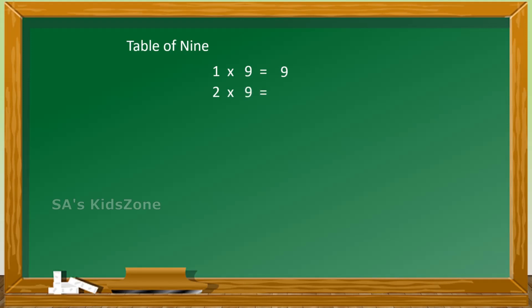2 nines are 18, 3 nines are 27, 4 nines are 36, 5 nines are 45, 6 nines are 54.